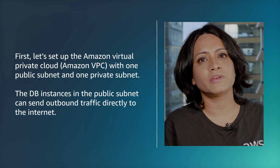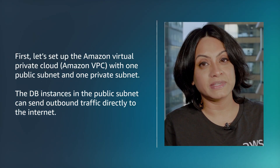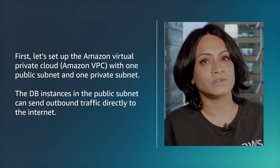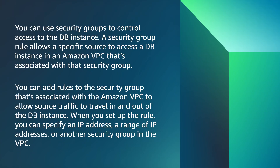First, let's set up the Amazon Virtual Private Cloud, Amazon VPC, with one public subnet and one private subnet. The DB instances in the public subnet can send outbound traffic directly to the internet. You can use security groups to control access to the DB instance. A security group rule allows a specific source to access a DB instance in an Amazon VPC that's associated with that security group. You can add rules to the security group associated with the Amazon VPC to allow source traffic to travel in and out of the DB instance.